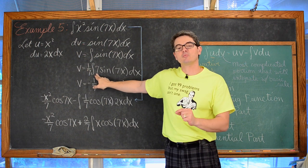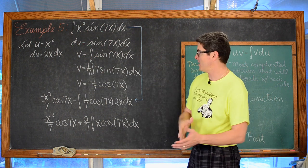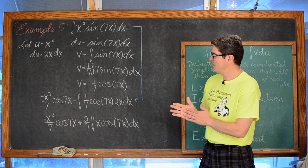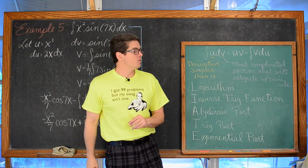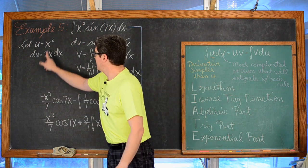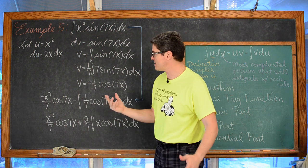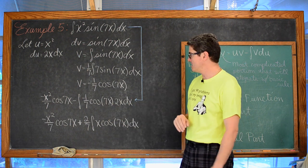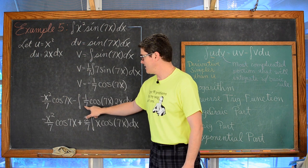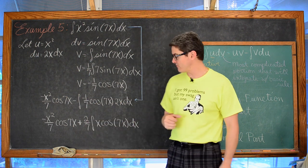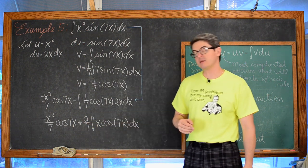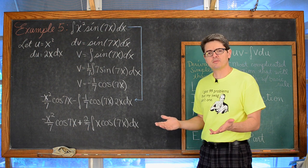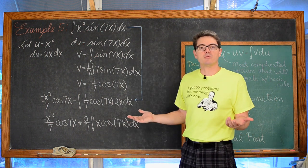We needed to finish the chain rule — introduce a multiplication of 7 and balance it with a division of 7. The integral of sine is negative cosine, so v equals negative one-seventh cosine of 7x. Setting up the integration by parts formula, we get negative x squared over 7 cosine of 7x, minus the indefinite integral of negative one-seventh cosine of 7x times 2x dx. Factoring the constants out front gives us plus two-sevenths in front of the integral.